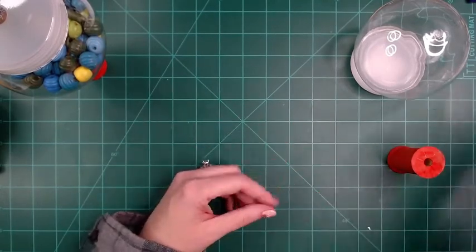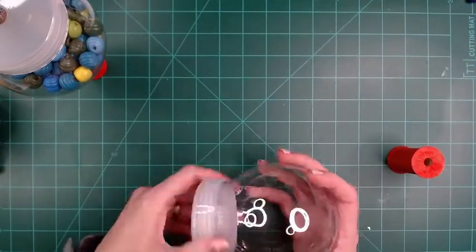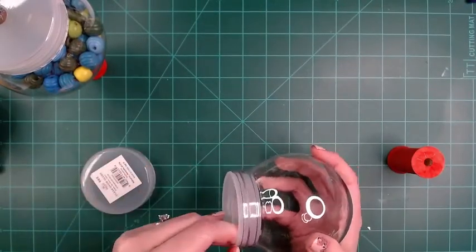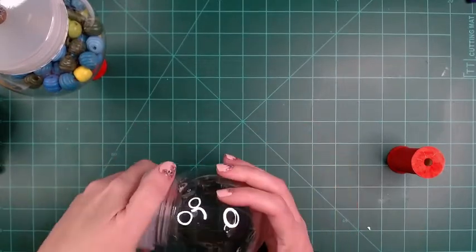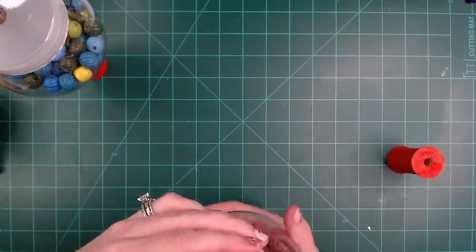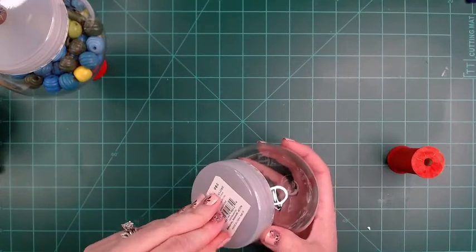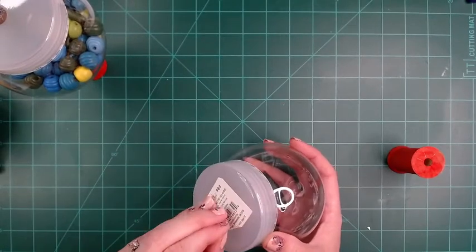First thing I'm going to do is take this and pop this off because you do not need that unless you're going to make it a snow globe. I'm also going to take the sticker off. Like I said, these came from Walmart for 98 cents.